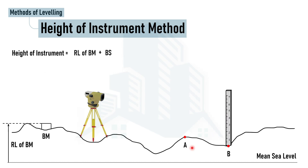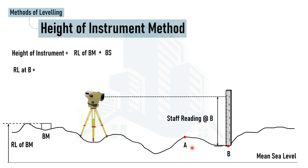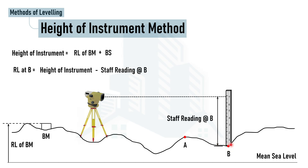Similarly, for point B, we place the staff at point B and determine the staff reading. The reduced level at point B is calculated as: Height of Instrument minus the staff reading at point B, because again we are moving downward from the instrument axis. This way we can proceed to find reduced levels of all points in a single instrument setup.